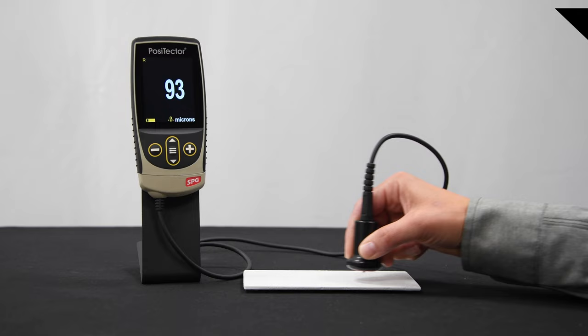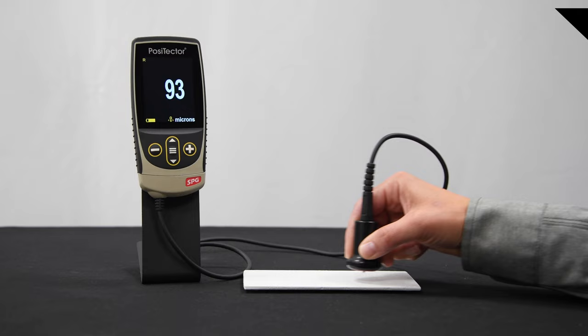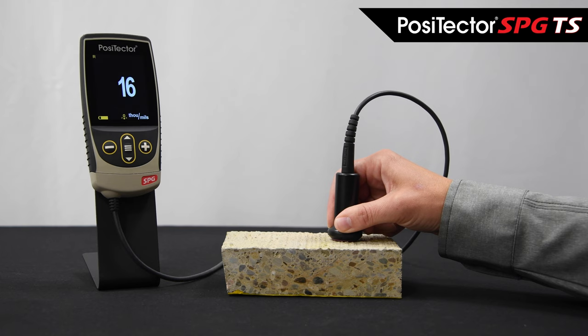Additional models are available with a greater range and rounder tip for measuring the profile of textured coatings, the PosiTector SPG-CS, and for measuring the profile of concrete, the PosiTector SPG-TS.